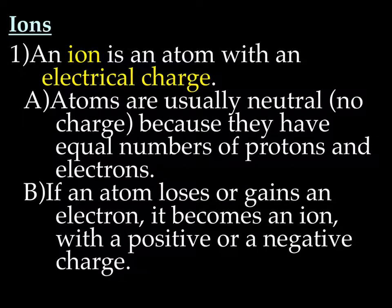We're going to start with a little discussion about ions. An ion is an atom with an electrical charge. If you remember the definition of an atom, an atom has no charge because it has equal numbers of protons and electrons. But an atom can have a charge — once it's got a charge, it's no longer an atom. It's now an ion.